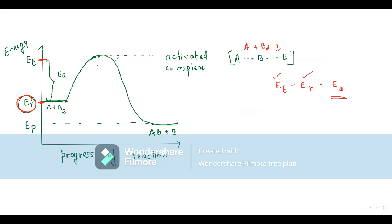The activated complex, also called the transition state, is an intermediate with a very short life because of its high energy — it is highly unstable. From the activated complex, new products are immediately formed; here AB + B. In the diagram, the energy of product Eₚ is shown as less than Eᵣ, though it can also be greater. This single graph explains threshold energy, activation energy, and how the activated complex is formed.